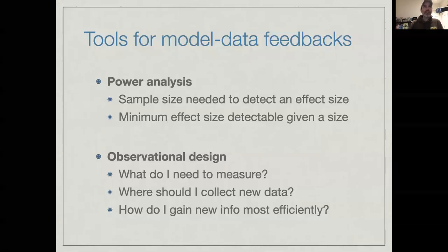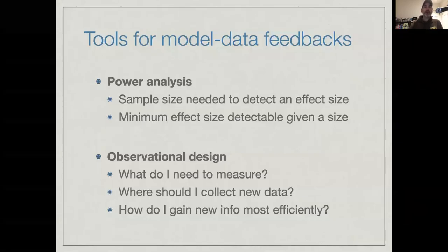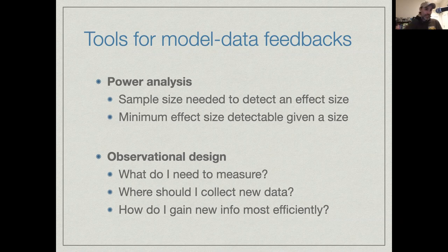Welcome back. In the last video we were talking about how we can use uncertainty analyses to identify the dominant sources of uncertainty affecting our model predictions, use that to try to target more efficient field sampling, more efficient data collection in order to constrain our models more efficiently and reduce our uncertainties in our predictions and basically improve our predictability.